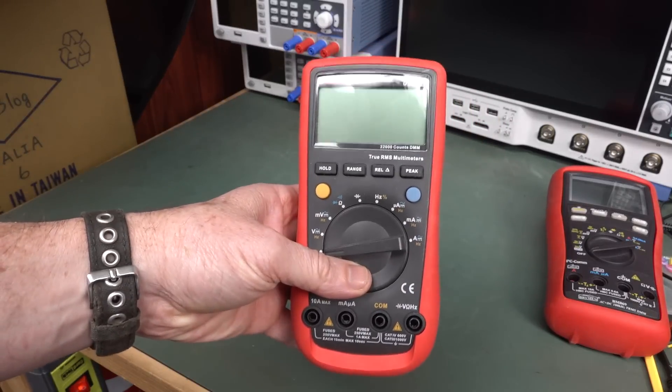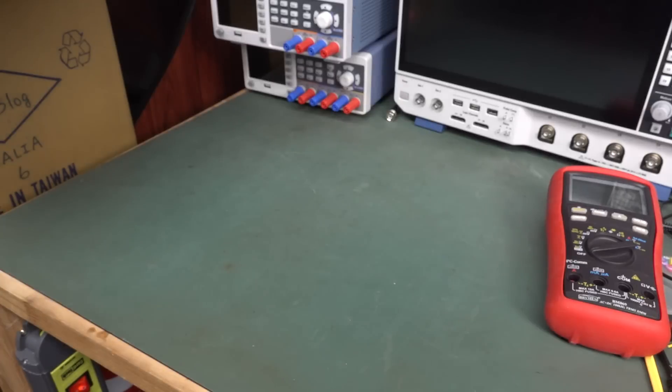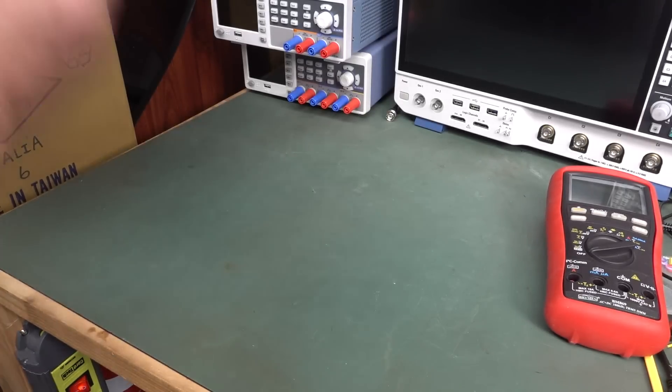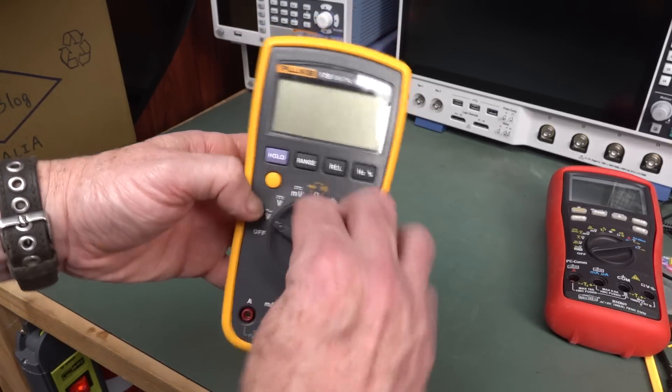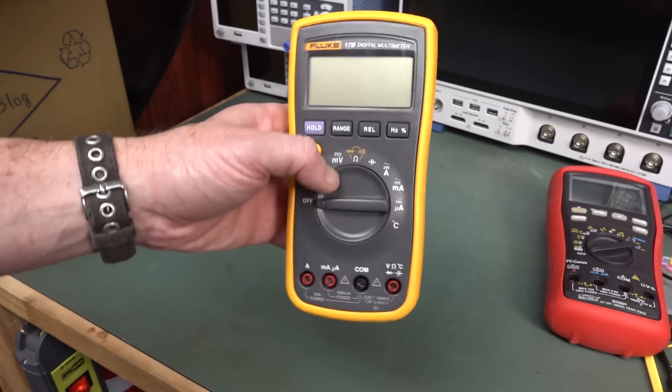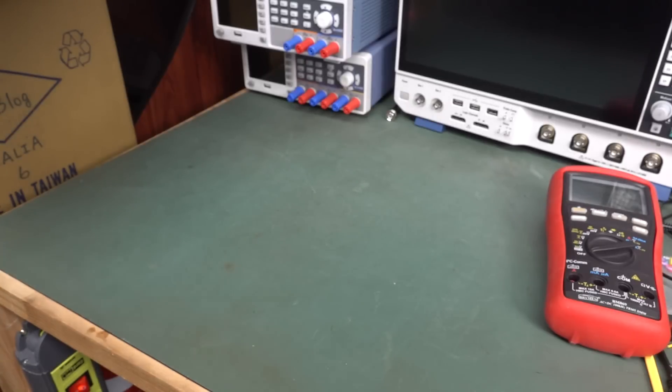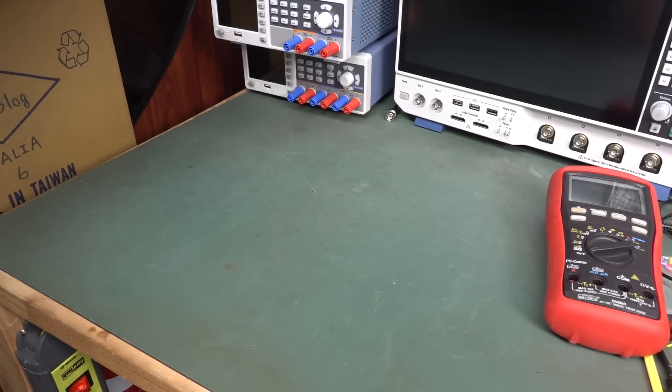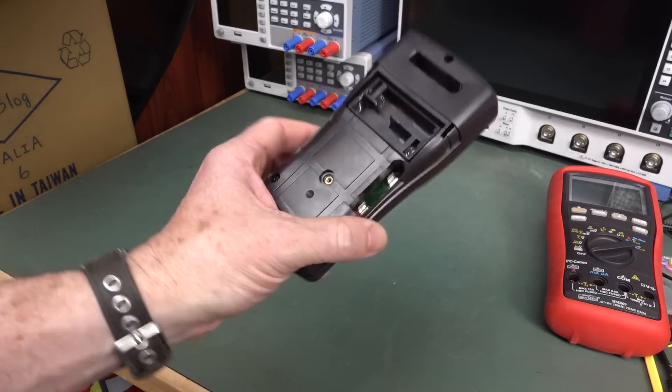And the original Uni-T UT61E. The fanboys go wild. And we're still going. Fluke 17B. The 17B fanboys, they go wild. Yep, no worries. That's, you know, a 17B is an excellent meter. Really excellent meter. It's well worth your money. Definitely.